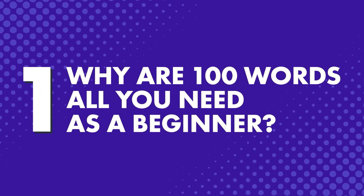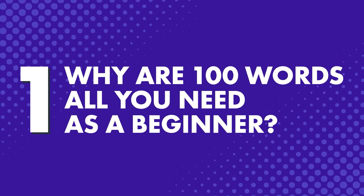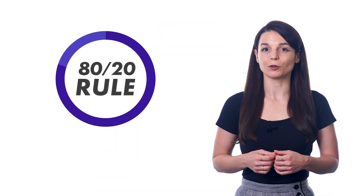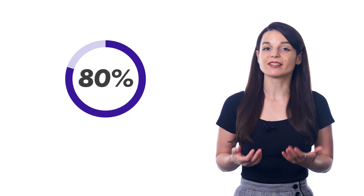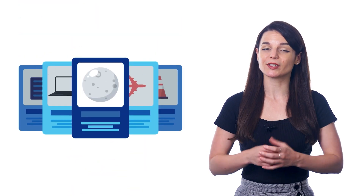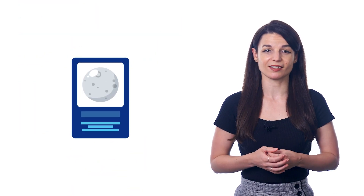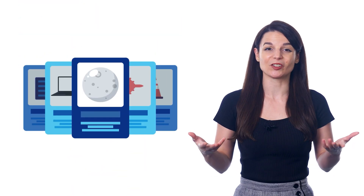First, why are 100 words all you need as a beginner? Because overwhelming yourself with 1,000 words is not a good way to learn. And because of something called the 80-20 rule, or the Pareto Principle. This states that 80% of your progress and results will come from just 20% of what you've done, meaning you'll get the best results from focusing on a few things instead of trying to do everything.